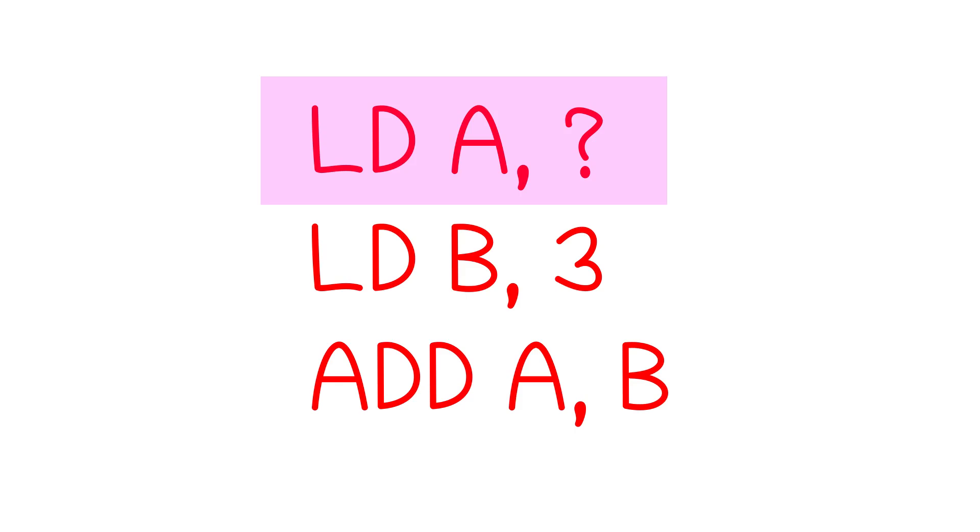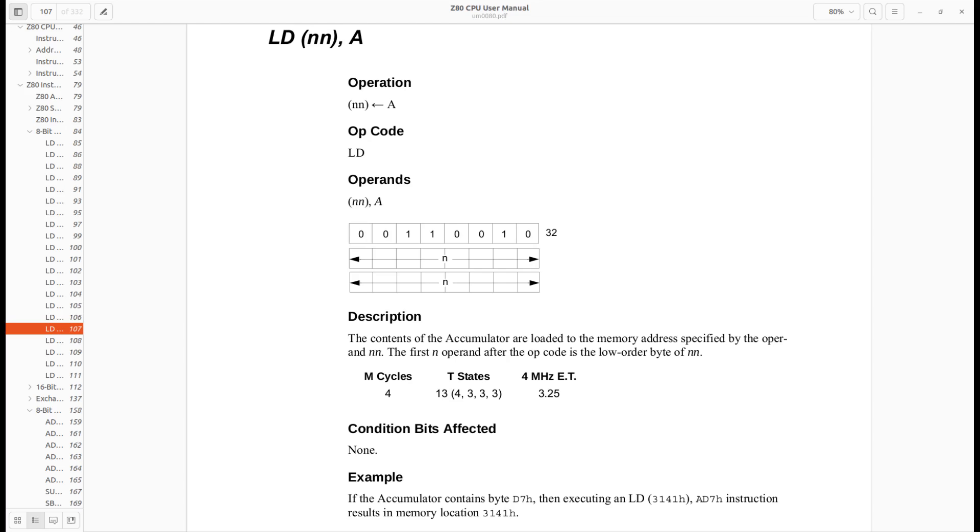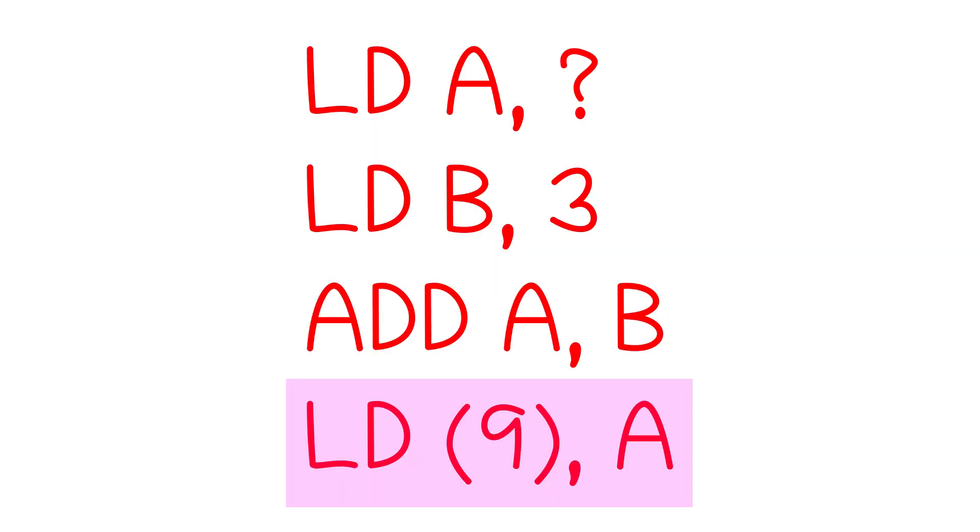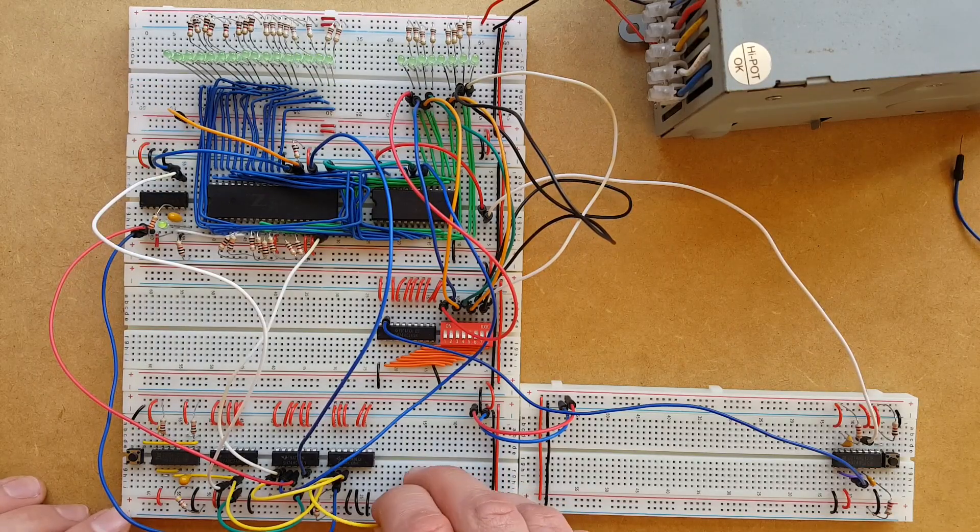But we can't actually see the answer yet because we can't directly read the contents of the A register. So we have to take the value from the A register and put it somewhere in memory so we can see it using the examine function of the computer. So for that we're going to use this instruction here, load NN A, and what this does is loads the contents of the A register into the memory location NN. And for absolutely no reason whatsoever, let's put the answer in address 9. So our little program loads 2 into the A register and then loads 3 into the B register, adds the two together, and then puts the answer in memory address 9.